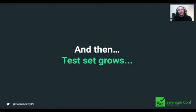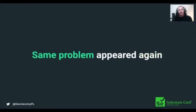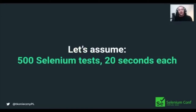Then the problem appears. We develop our application, it becomes much more complex, and we have to write additional tests. The test suite grows, so execution time increases - 10 minutes, 30 minutes, maybe even hours. Automated tests aren't fast anymore; we have exactly the same problem we had earlier. Tests aren't fast anymore, but we already have them automated. How can we fix this?